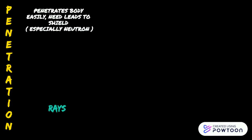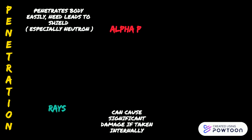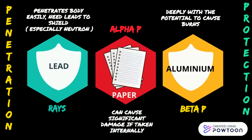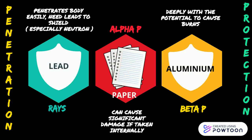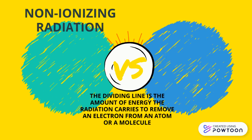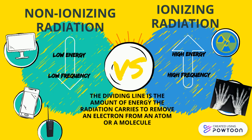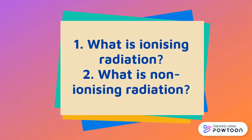Gamma rays and x-rays penetrate the body easily, while alpha and beta particles are essentially blocked by the skin. Gamma rays and x-rays need to be stopped by lead, while beta particles can be stopped by aluminium and alpha particles can be stopped by paper. Remember, the dividing line is the amount of energy the radiation carries to remove an electron from an atom or a molecule. Please answer these questions in your exit ticket — thank you.